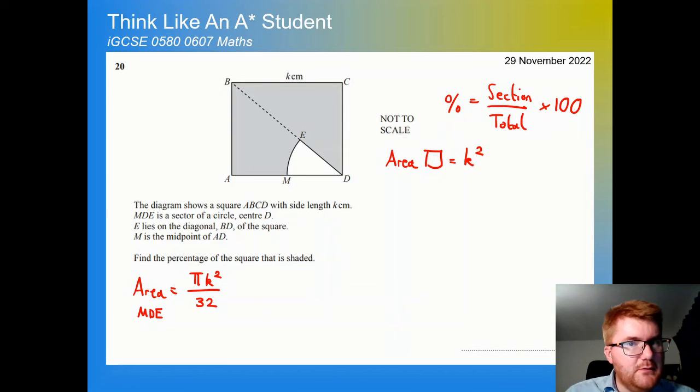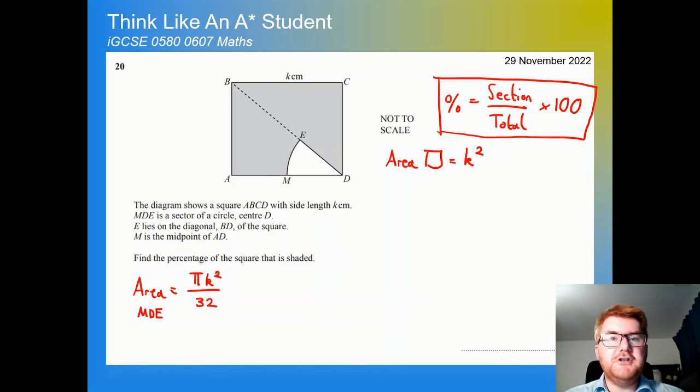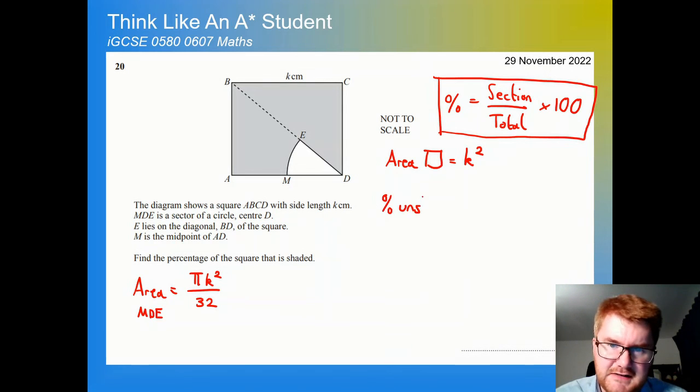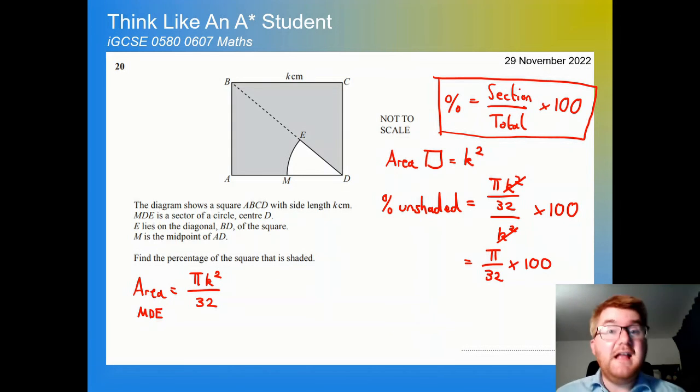So there's a lot of working on that particular page. Let's just really focus on what we need. So the area of MDE is equal to pi K squared over 32. The area of the square is equal to K squared. And remember the formula that I have here. So it's a really useful technique: once you've done some working calculation, you don't want to be overwhelmed by everything on the page. Really reduce it down to what you need for the next step. So what we're going to do here is work out the percentage unshaded by using what we have so far. So the section is equal to pi K squared over 32 divided by the total, which is K squared times 100. And one of the benefits of not rushing to that calculator too early is that you can do some nice canceling. Notice we have a K squared here and a K squared here, simplifying down to pi over 32 times 100.